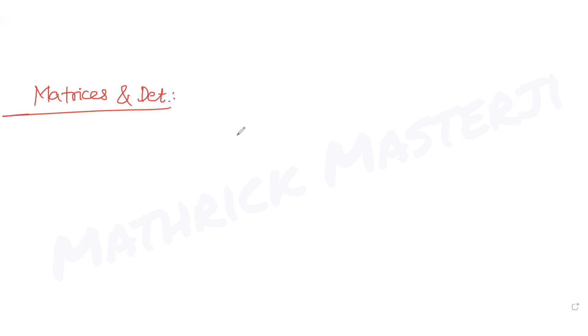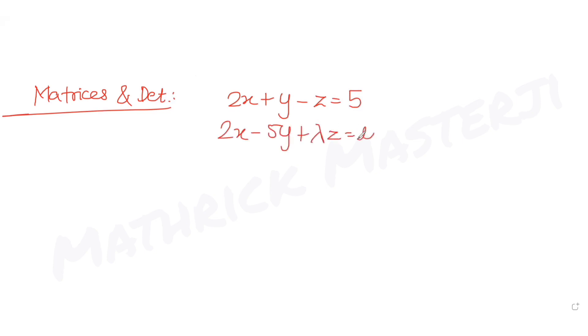Hi guys, I hope you are all doing well. Today's question is from the topic of matrices and determinants. The question tells us that we have a system of equations: 2x + y - z = 5, the second is 2x - 5y + λz = μ, and the third is x + 2y - 5z = 7.